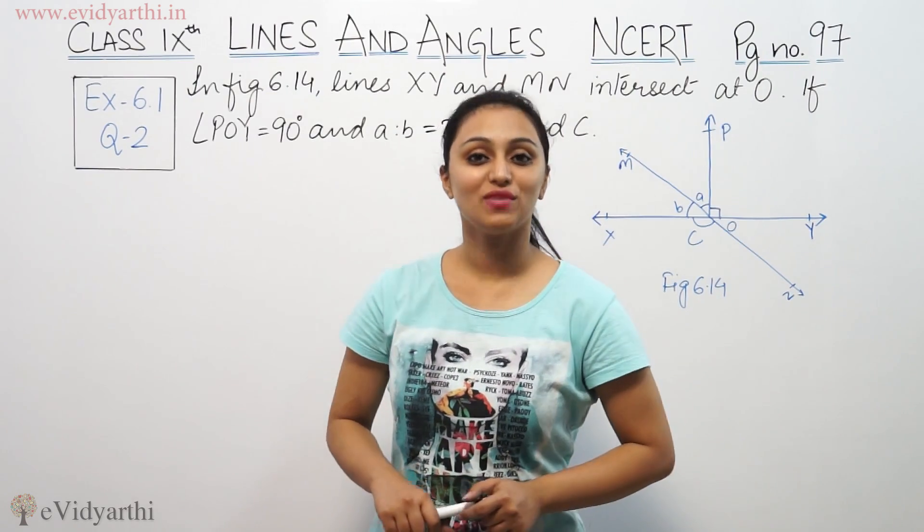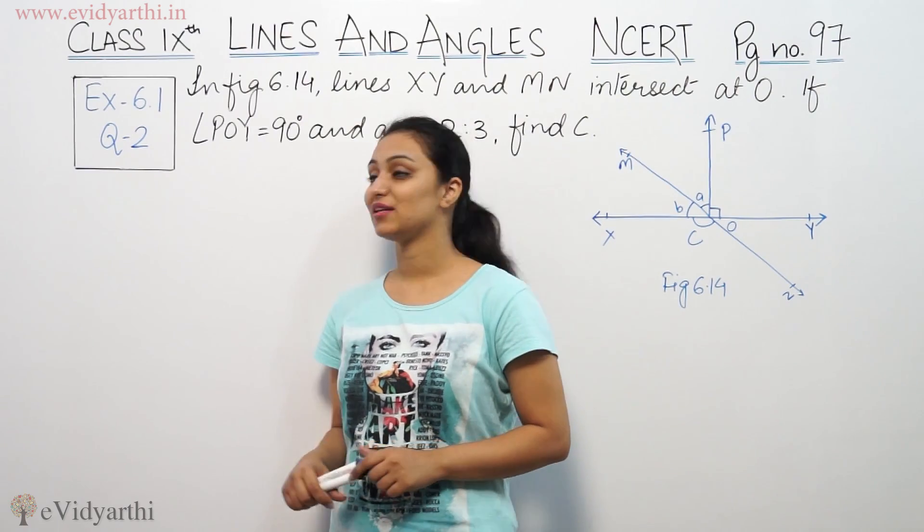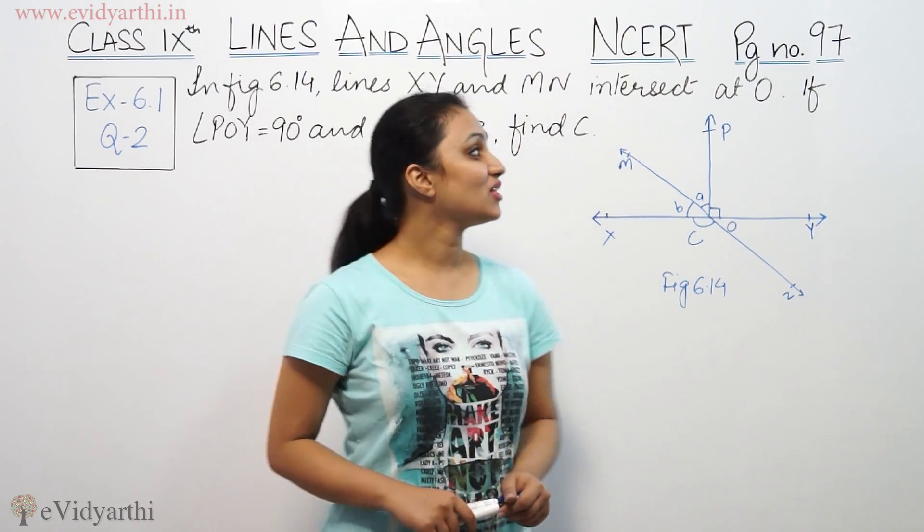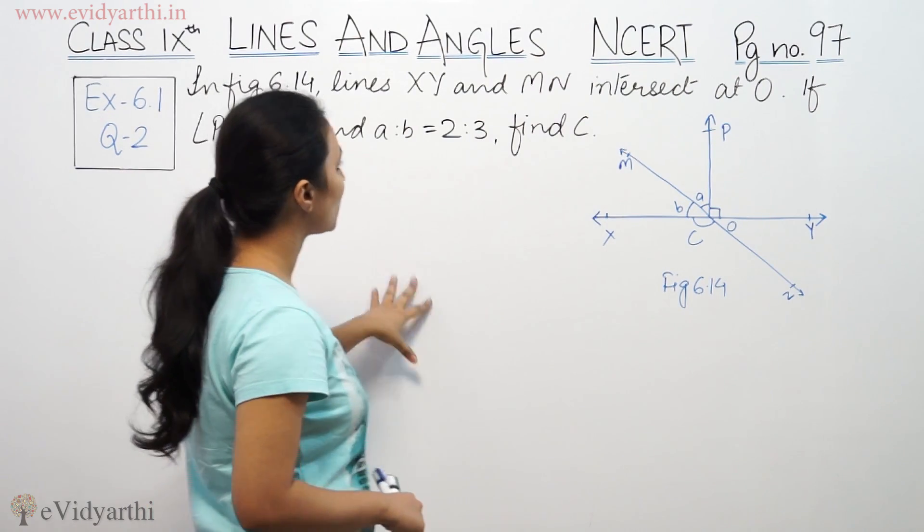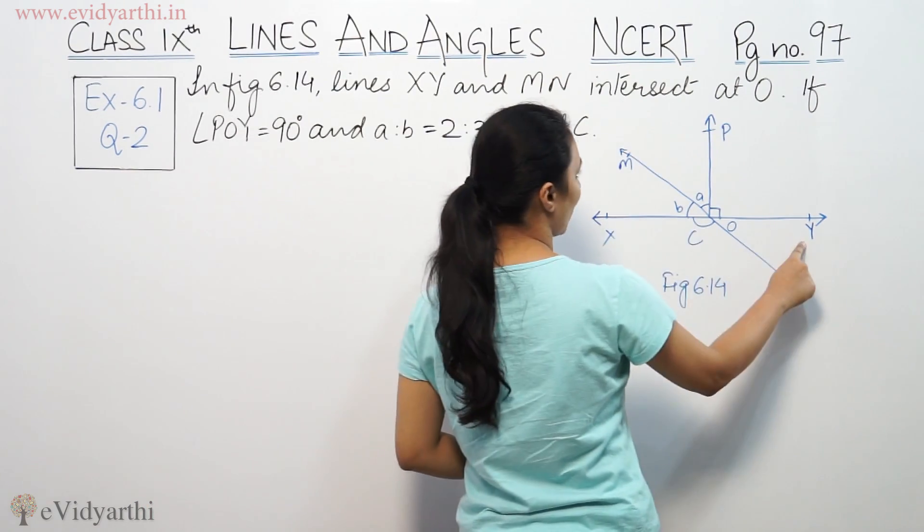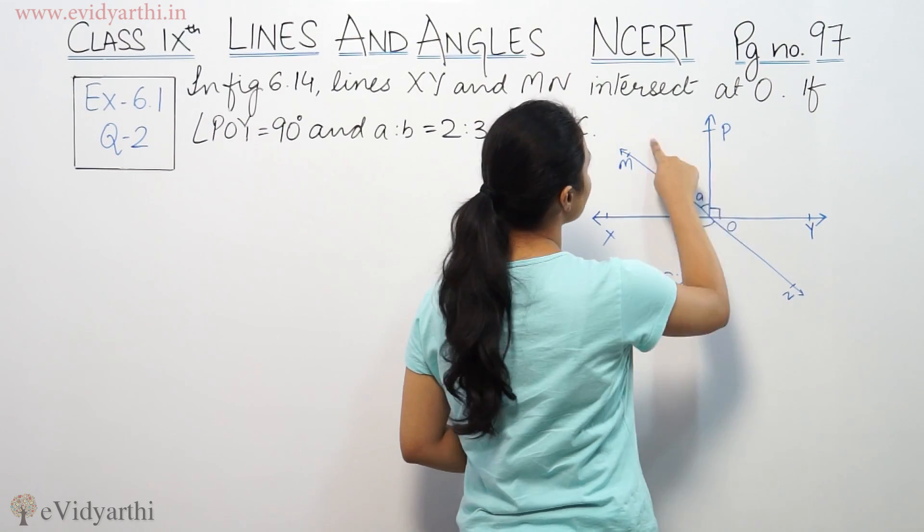Hi, this is Kushpoo with another question on lines and angles. This is question number 2 from exercise 6.1, page number 97 from NCERT. It says in figure 6.14, lines XY and MN intersect at O.